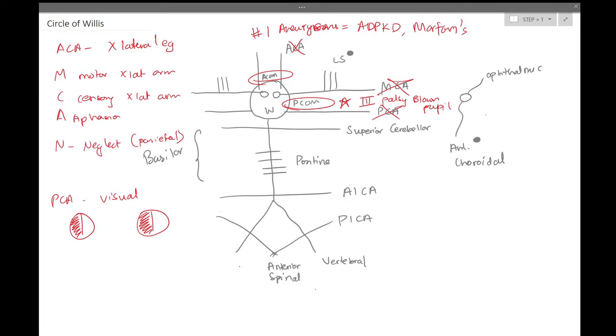A few other high-yield topics in the cerebral circulation that we can go over are all related to the MCA. So once again, MCA is going to be your number one infarct stroke, and the most common symptoms we've already discussed, which involve the arm and aphasia. However, there's also this high-yield syndrome called Gerstmann syndrome.